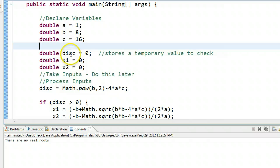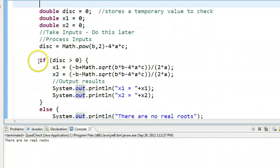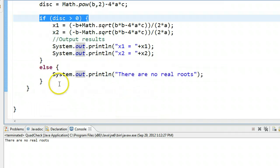So what's happening is it's coming down here, it calculates the discriminant, and then it says if the discriminant is greater than 0, and we know it's not. It's actually equal to 0, so it's going to jump down here and say there's no real roots, which is not true.